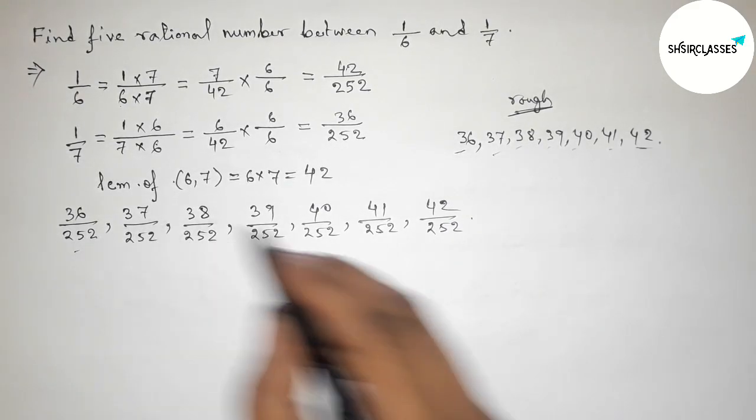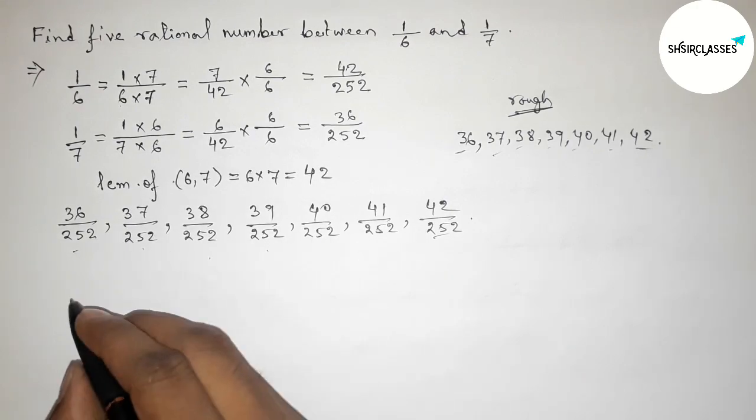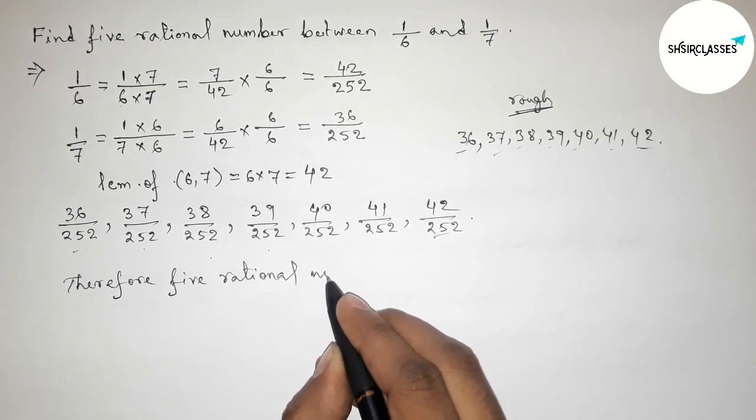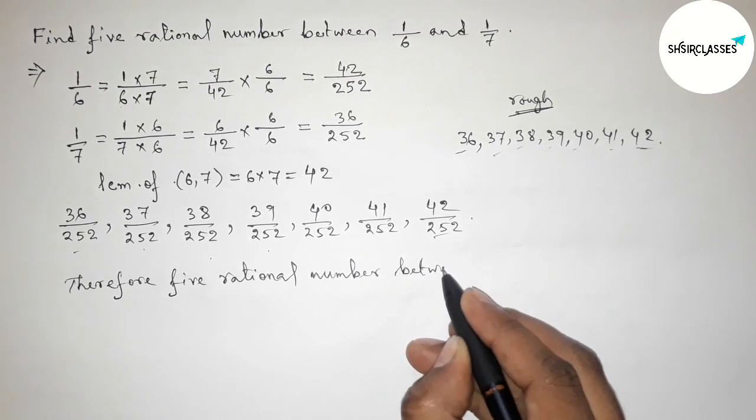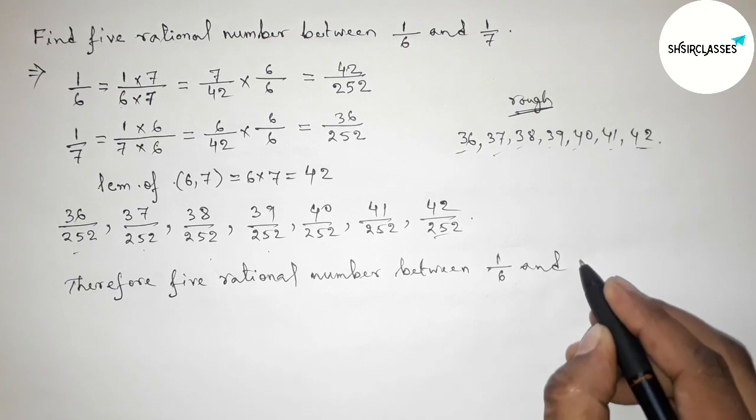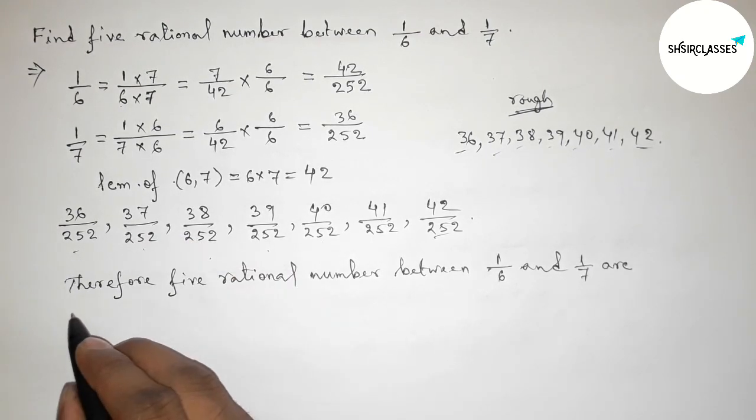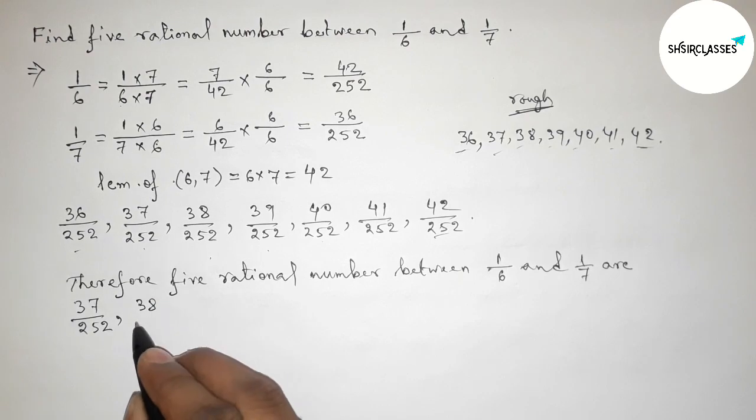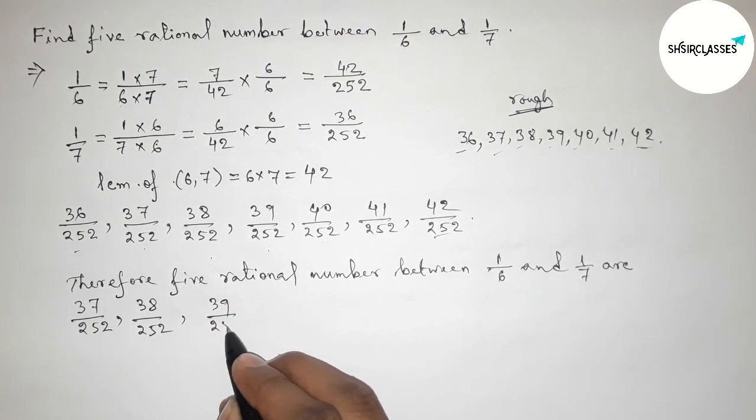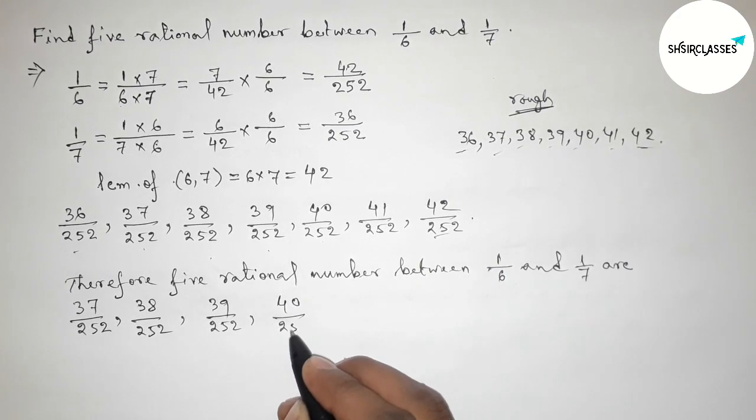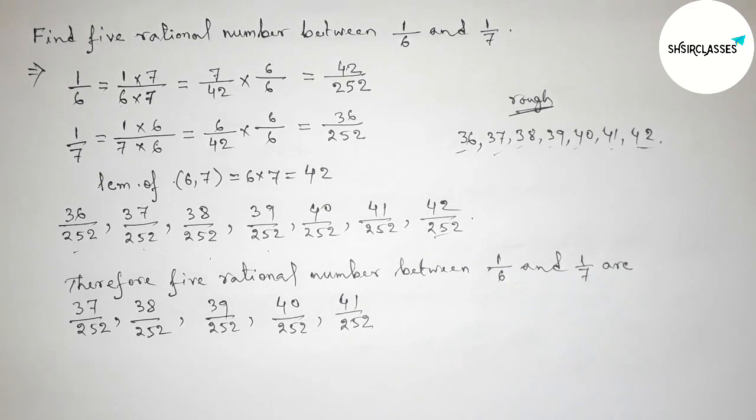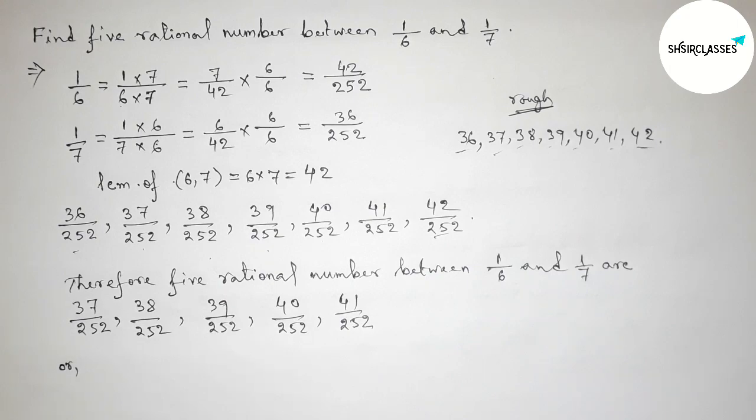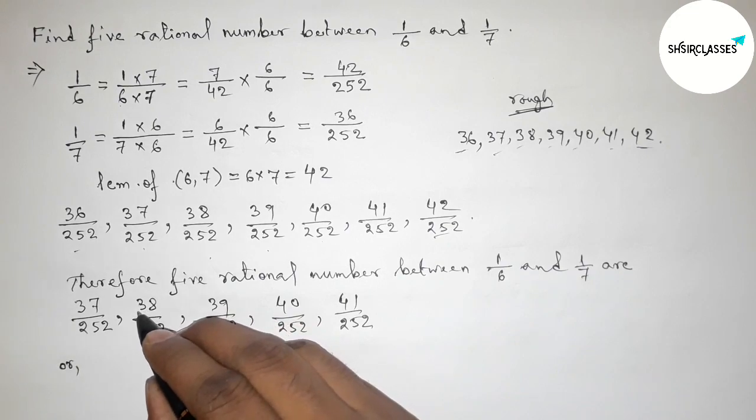Between the first and last, these are the 5 required rational numbers: 37/252, 38/252, 39/252, 40/252, and 41/252.